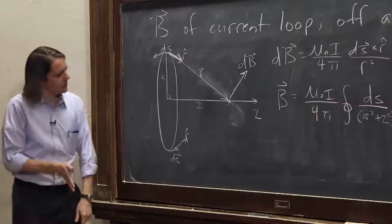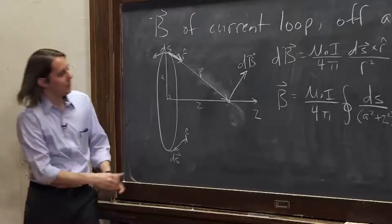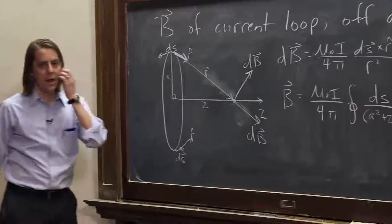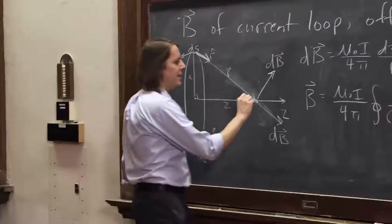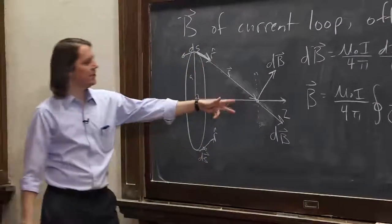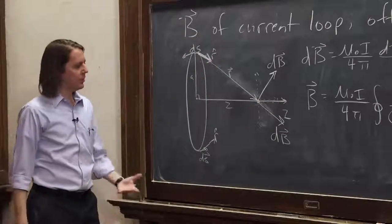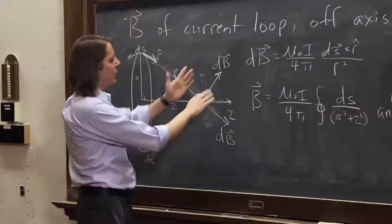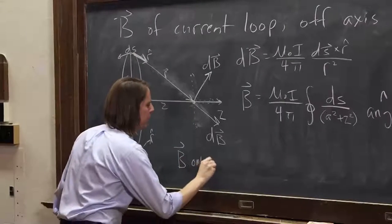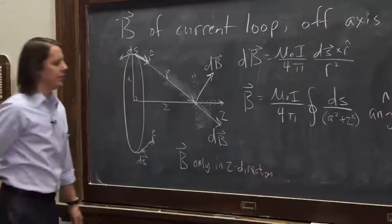dS cross, oh my gosh, let's see. So dS is going into the board, cross with r, kind of out, down like that. So that dB on that side is like that. And now you can see our old symmetry tricks. You can see that the vertical components of the Bs are going to cancel. The horizontal components are going to add. So this is another case of symmetry where we don't have to worry about this angle. We're only going to get the z component. So the B is only in the z direction. The other components cancel.